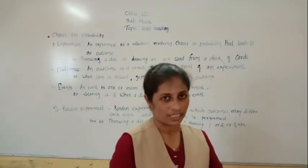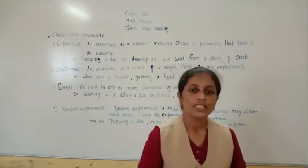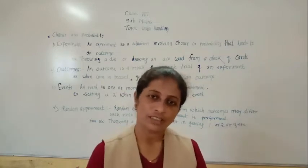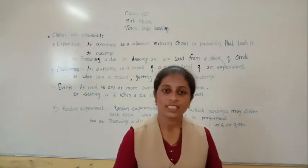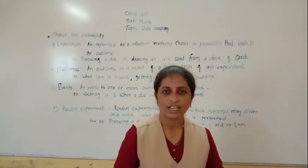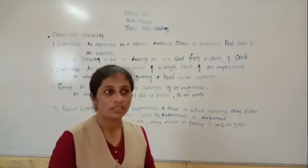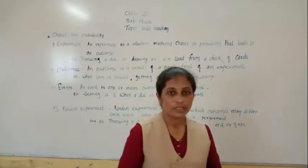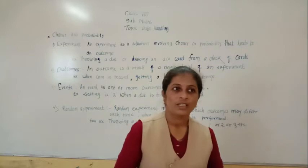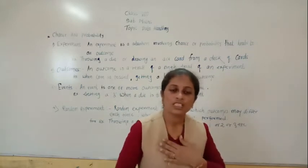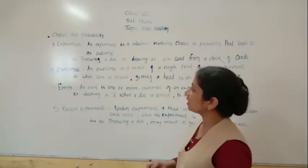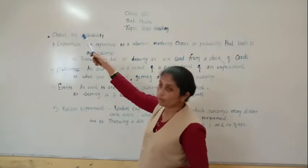One day the teacher says today is Monday and tomorrow is Wednesday. What happens? Students react — it is impossible! Today is Monday means tomorrow is Tuesday. So the terms related to this are: impossible, possible, unlikely, likely, most probably, and sure. These words are all related to chance and probability. Now we will see the terms related to chance and probability.